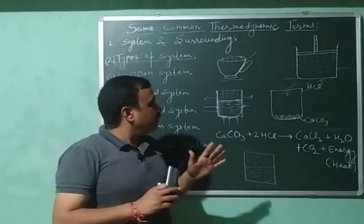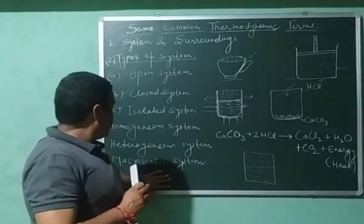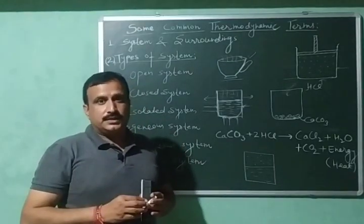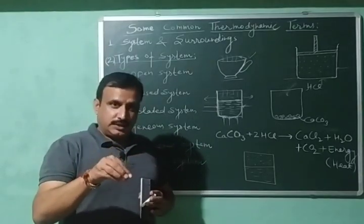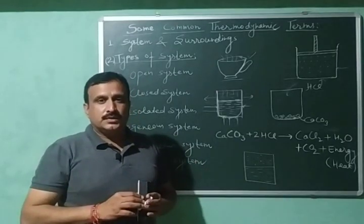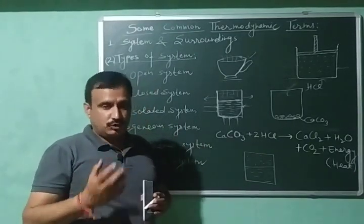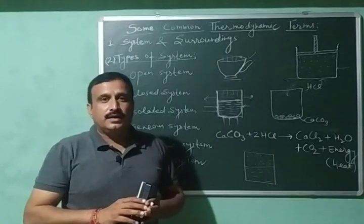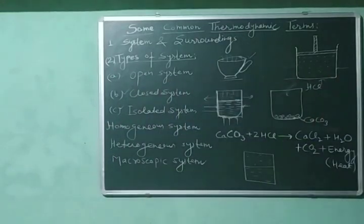I hope you are now familiar with the different types of systems in chemical thermodynamics. In my next video I will discuss the types of macroscopic properties — that is, extensive and intensive properties — and I will also discuss the state of a system and state variables. Thank you very much for watching, and please do subscribe to my channel and press the bell icon.